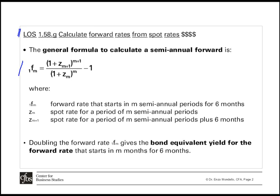The equation included in the candidate readings to calculate the semi-annual forward rate is as follows. The forward rate starting in m semi-annual periods for one semi-annual period equals 1 plus the spot rate for m+1 semi-annual periods, raised to the power of m+1, divided by 1 plus the spot rate for m semi-annual periods raised to the power of m, minus 1.